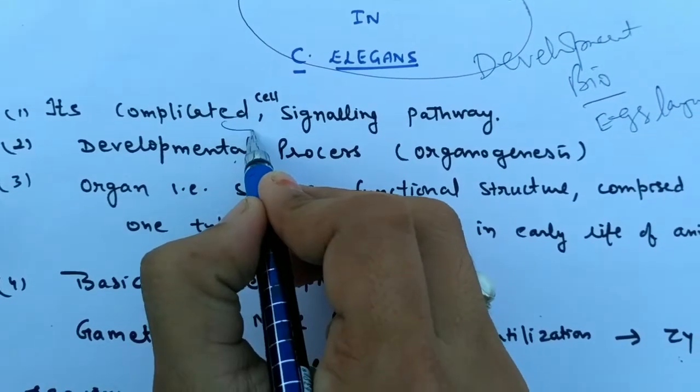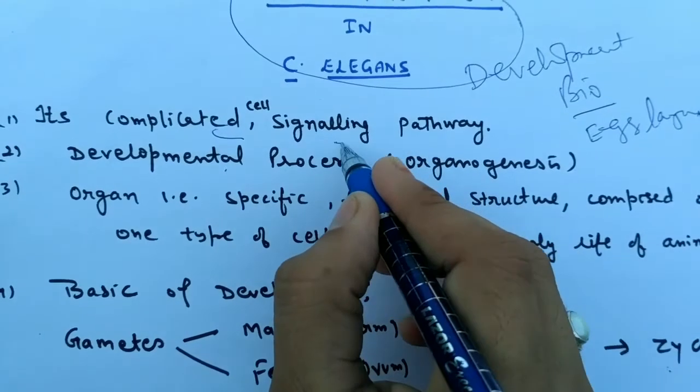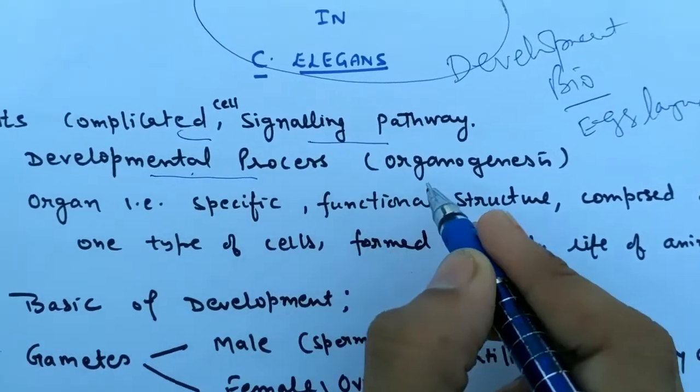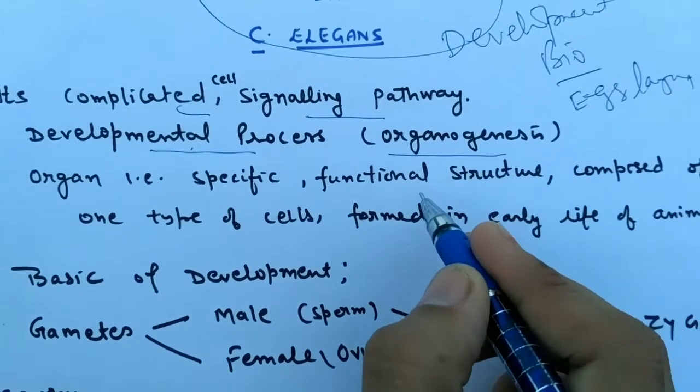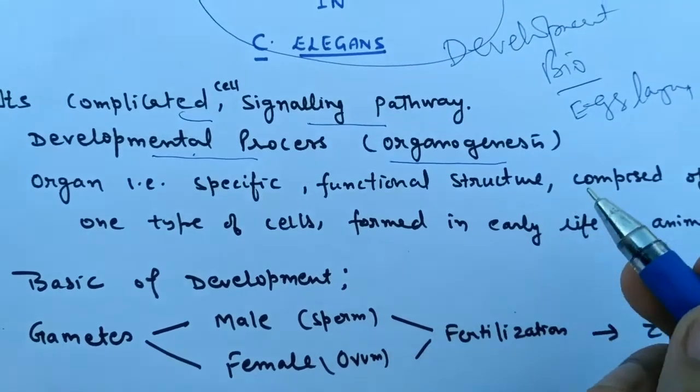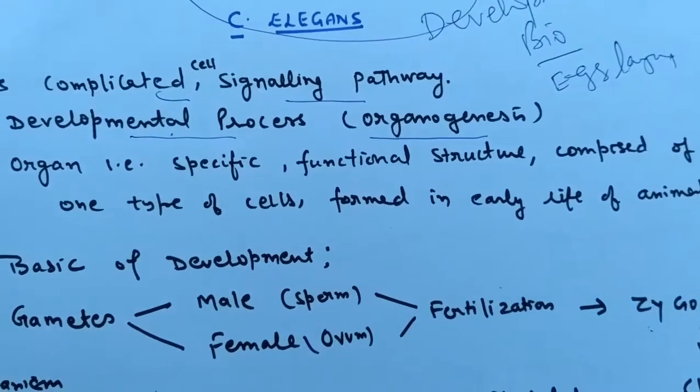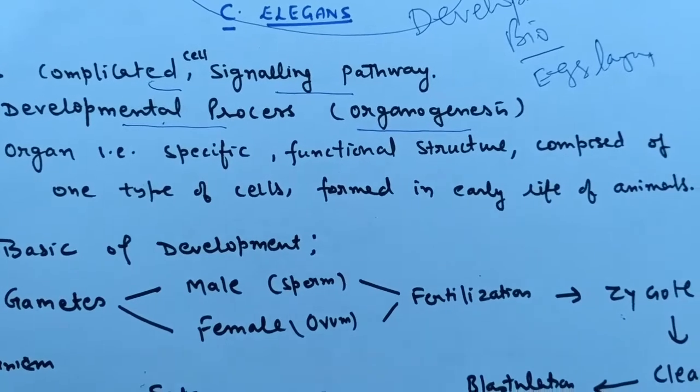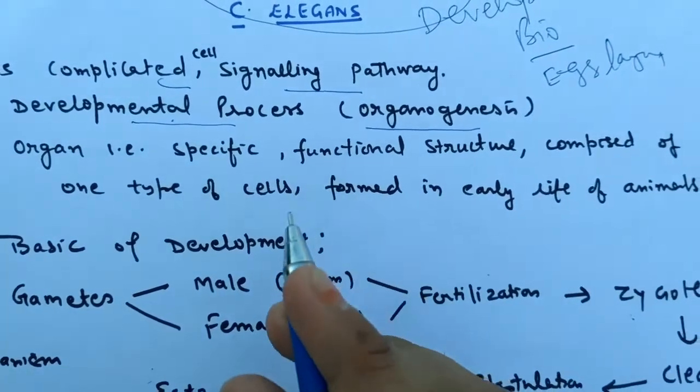It is a complicated signaling pathway, a developmental process that is part of organogenesis. The vulva is this type of organ. Organs have a specific structure with composition of similar types of cells and perform specific functions.